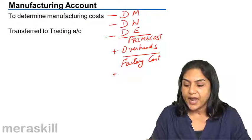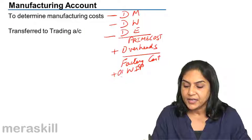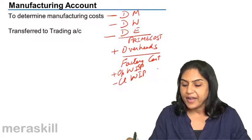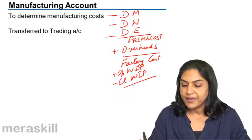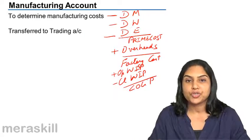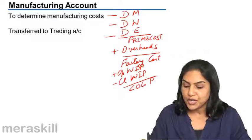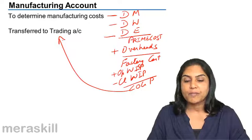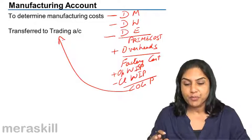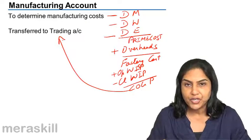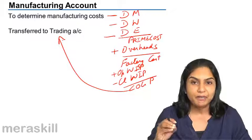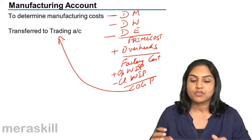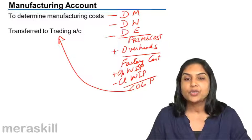To the factory cost we add the opening work in progress and deduct the closing work in progress to arrive at the cost of goods produced. This cost of goods produced is then transferred to the trading account. So the manufacturing account is prepared to find out the manufacturing cost — the cost of the goods being manufactured — and this cost is then transferred to the trading account.